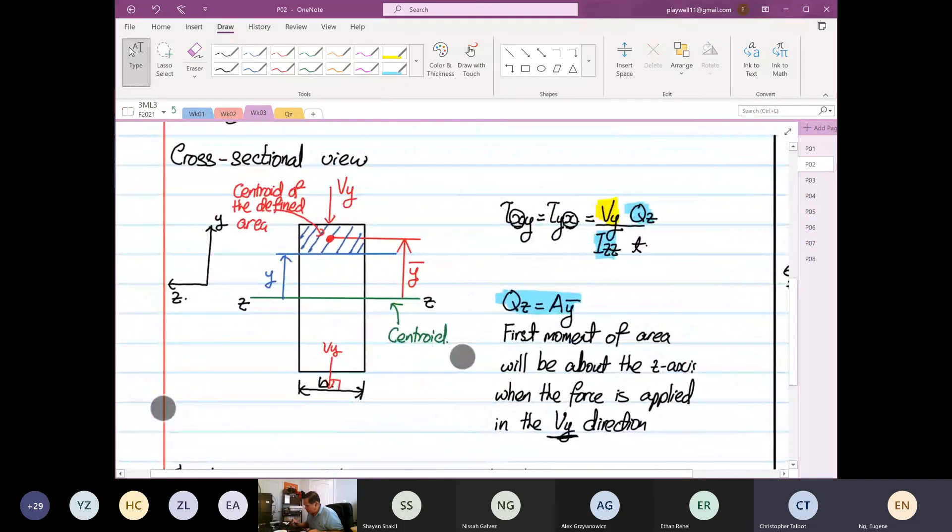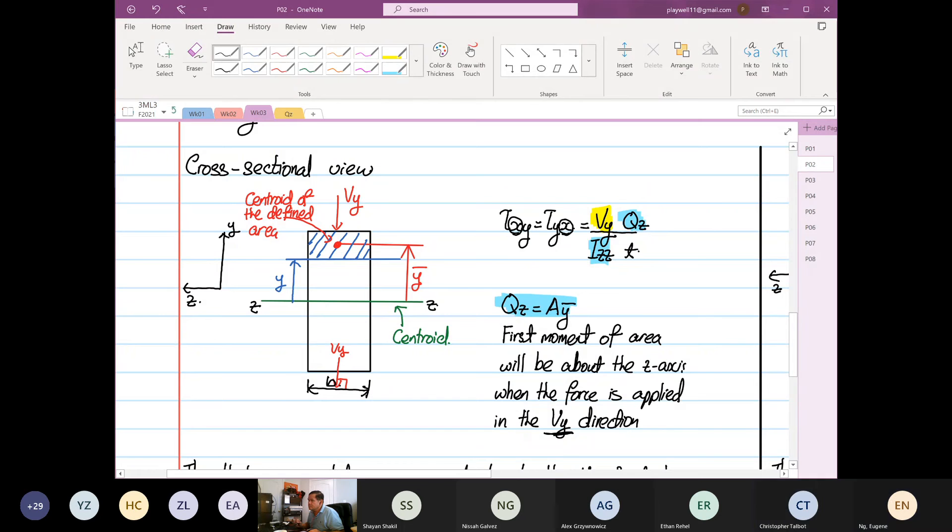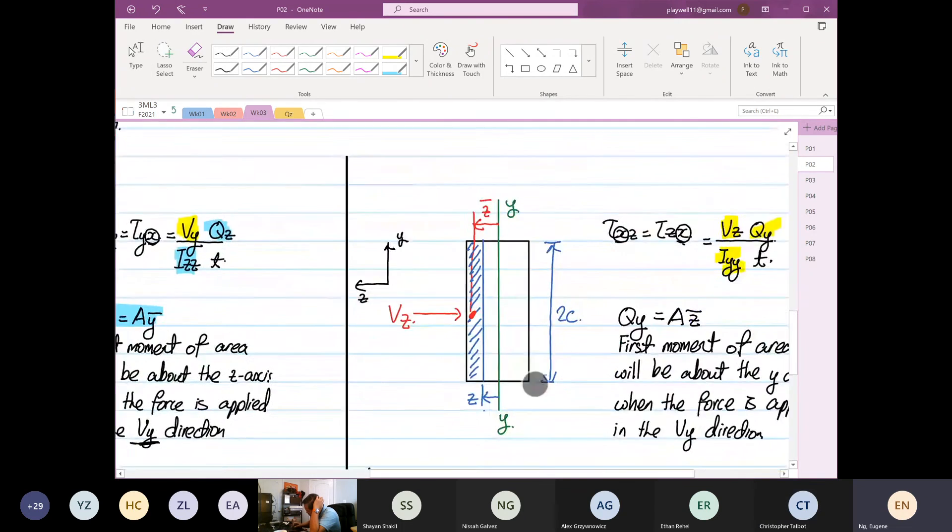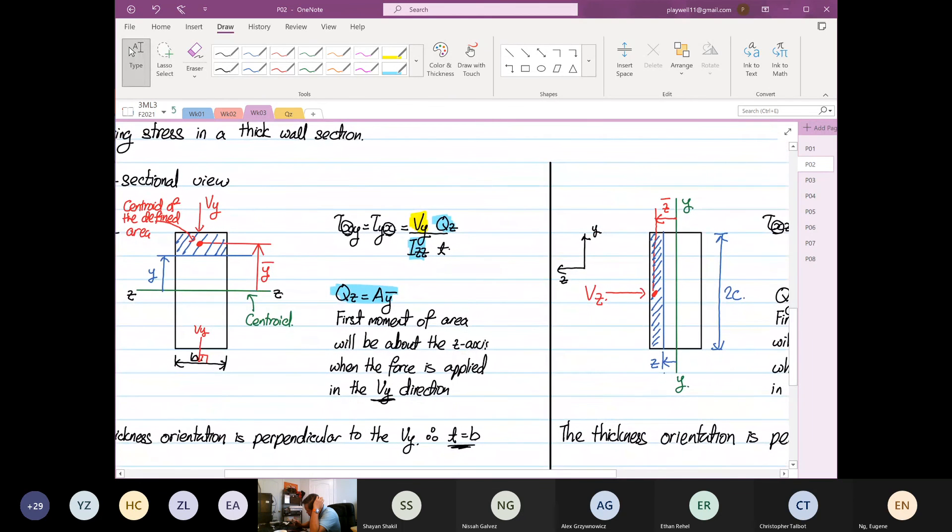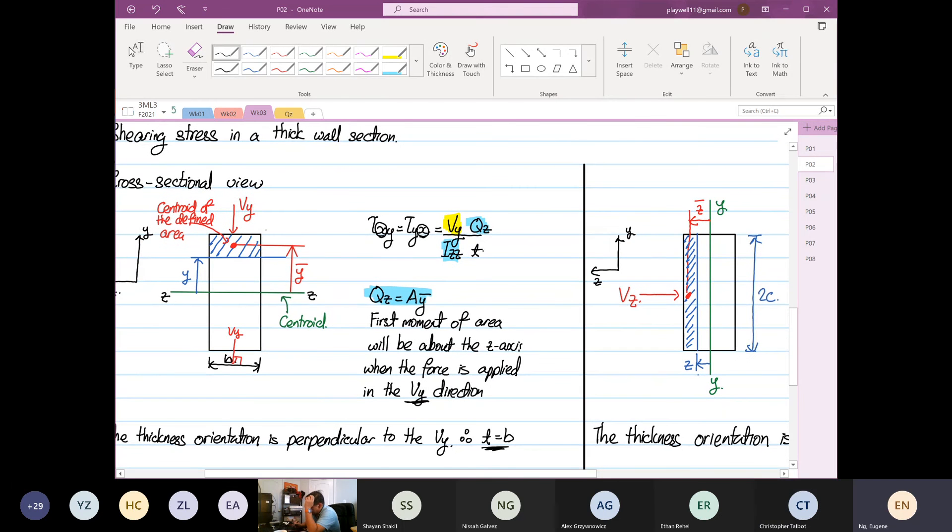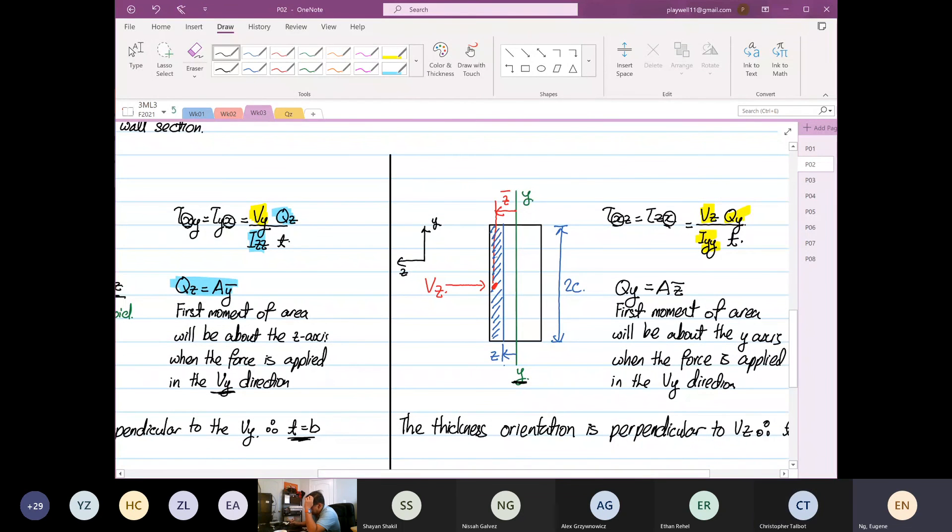So if it's Vy, that is the shaded area of interest. It has to be perpendicular to the shearing area of interest. The Q value—both area of interest are the same, it's how the variable is shifting. If it is in Vy, the b is the width. If it's Vz, the thickness is the 2C. But the Q is relative to the central axis. So this is Q based on Qz. This is based on Qy.